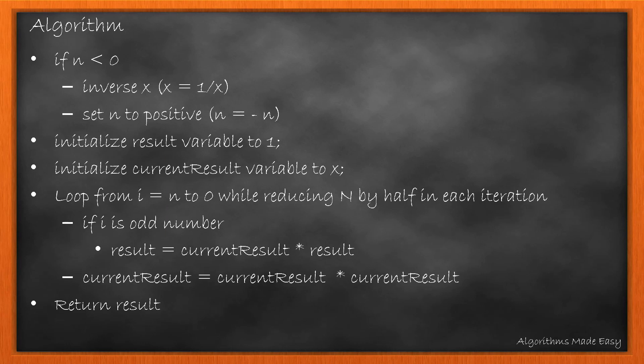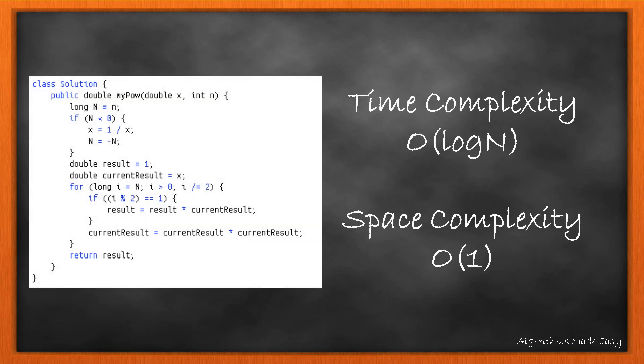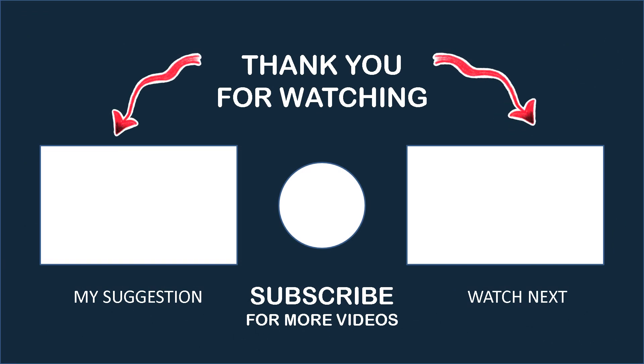The algorithm here is simple. We first check if n is less than 0. If yes, we inverse x and set n to positive. We then initialize result variable to 1 and current result variable to x. We loop from i equal to n down to 0, reducing n by half in each iteration. If i is an odd number, we update result with current result multiplied by result. Lastly, we update current result with current result multiplied by current result. At the end, we return the result. The time complexity here is also O(log n) as at each iteration we reduce n by half. The space complexity becomes O(1) as no recursion stack or extra memory is needed. You can find the link to all the codes shown in the description below. Let me know in the comments what you think about the video. Thank you.